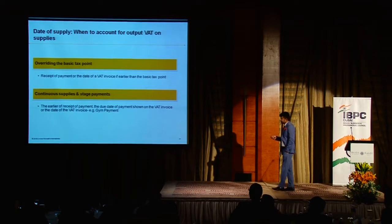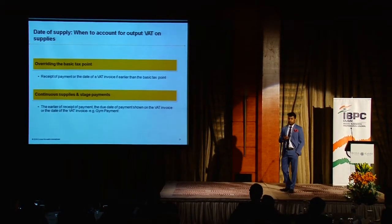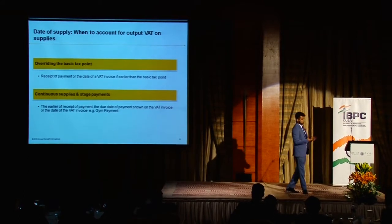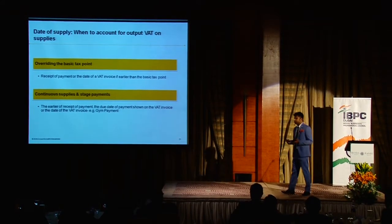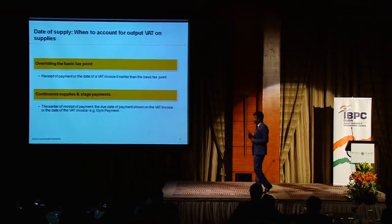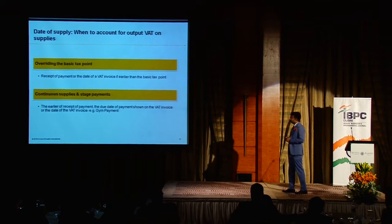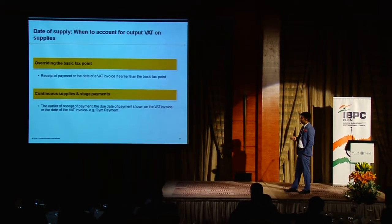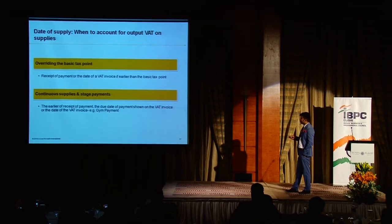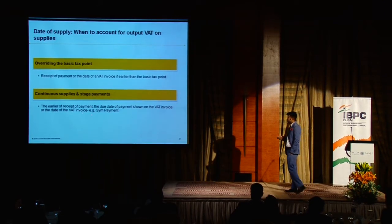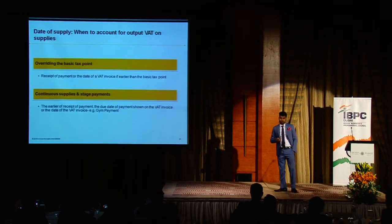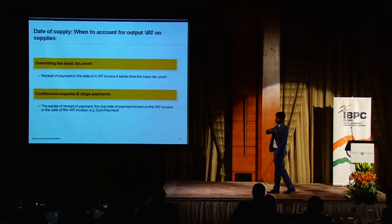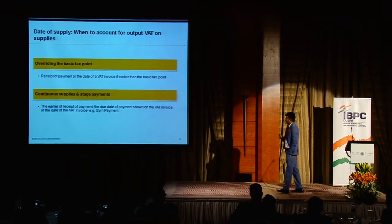For continuous supply and stage payments — for example, a health club membership or channel subscription throughout the year — the taxing point is the earlier of: receipt of payment, the due date of payment shown on the VAT invoice, or the date of the VAT invoice. The moment you receive the full amount, tax becomes due, even if the service lasts 12 months.